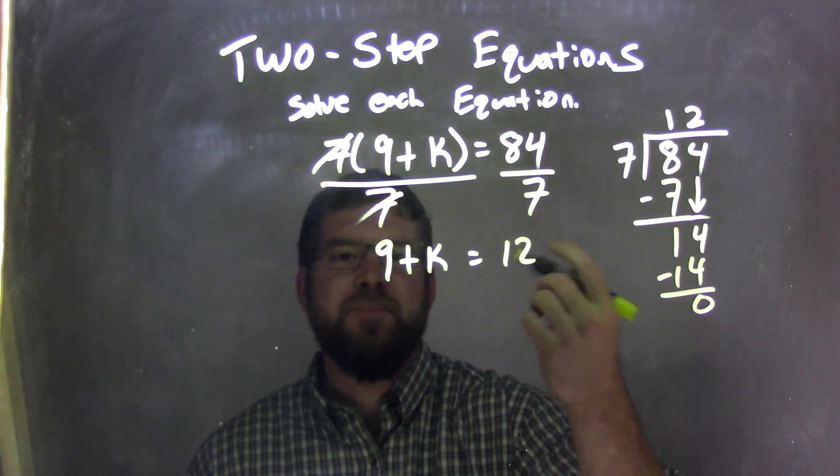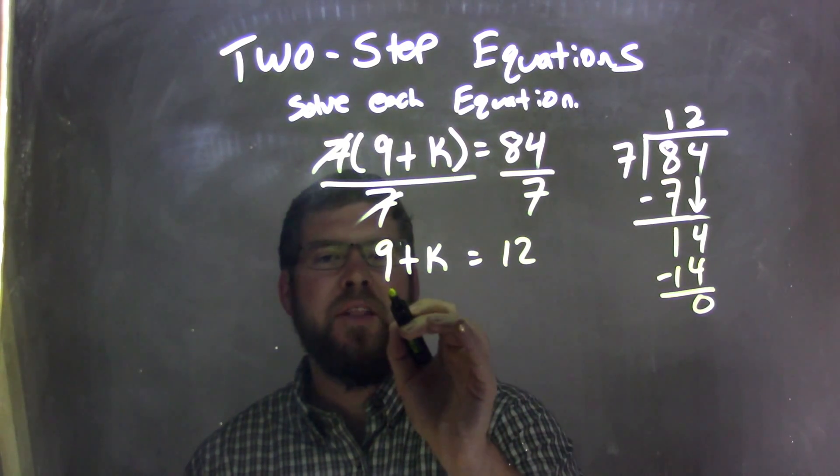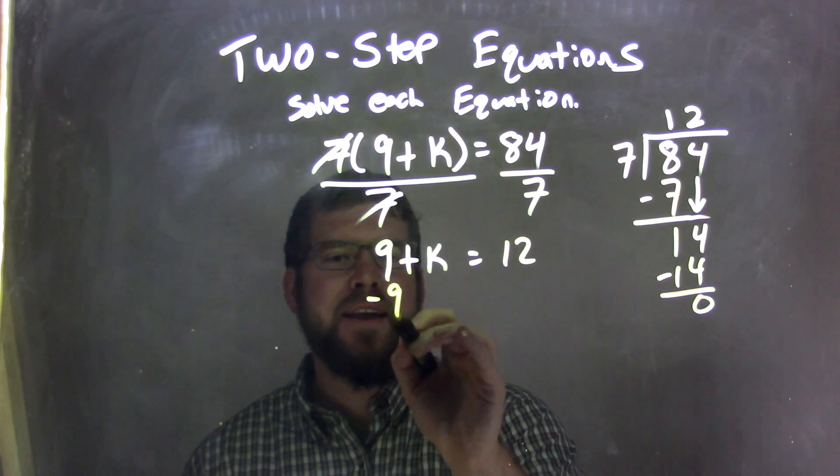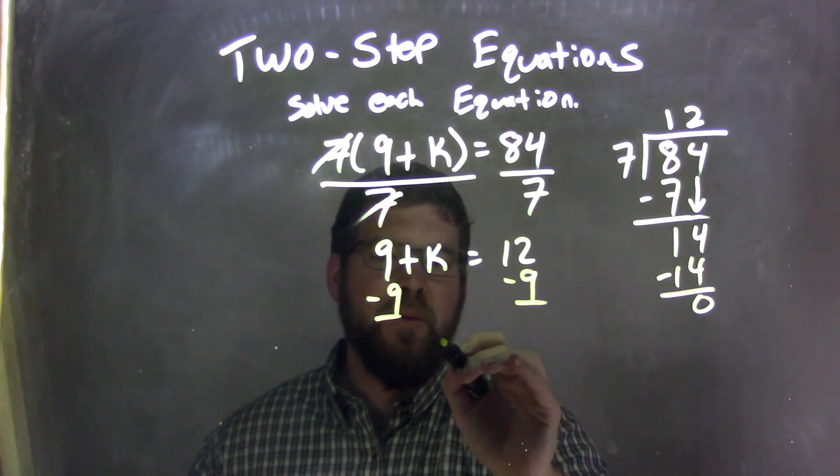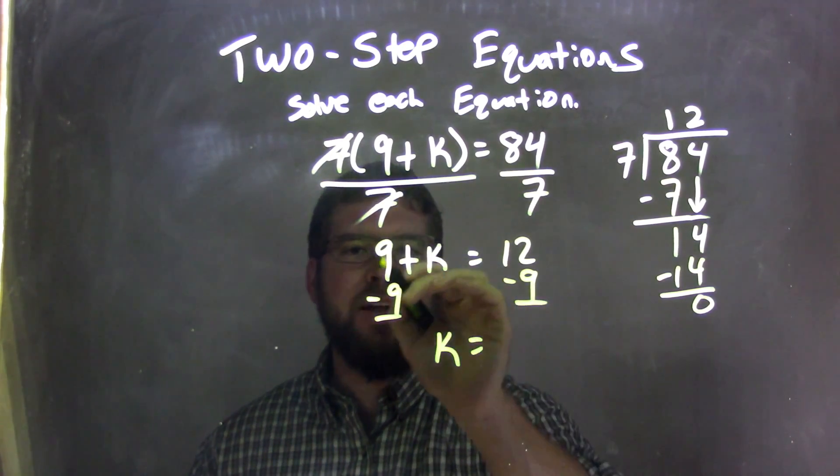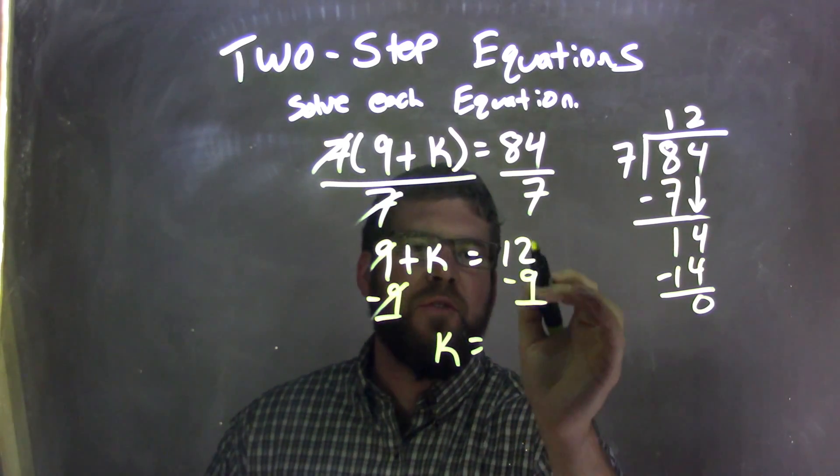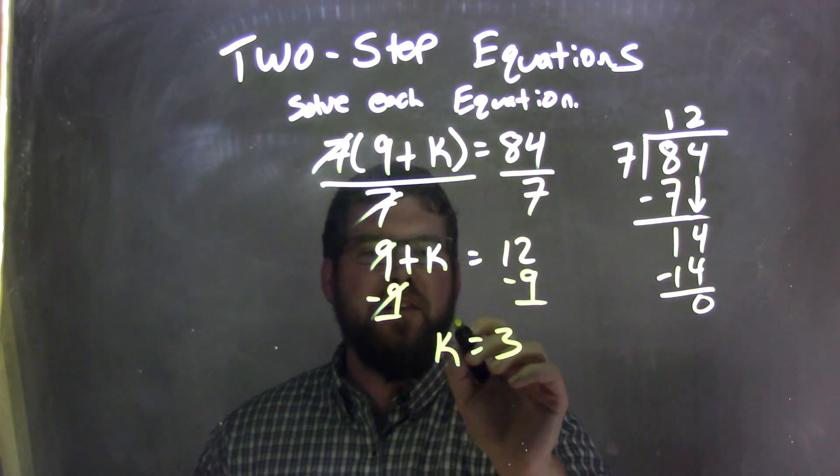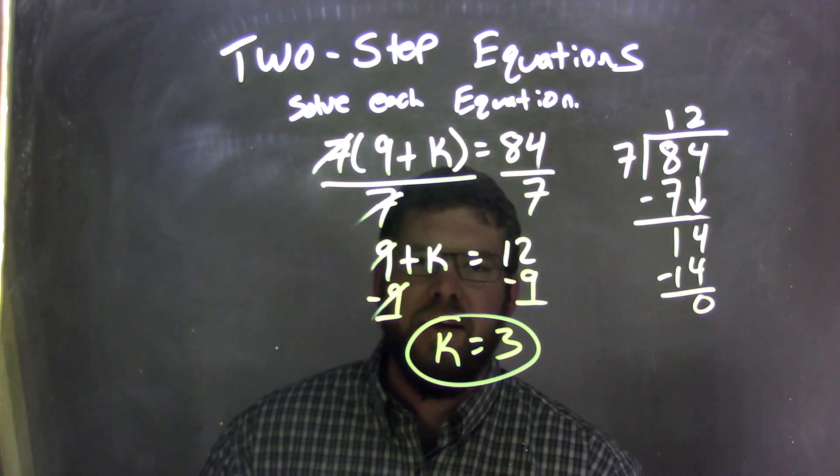I have 9 plus k equals 12. So now my next step here is getting rid of that 9. I'm going to subtract 9 from both sides. Leave me with k here. The 9s cancel. k equals 12 minus 9, which is 3. And so k equals 3 is my final answer.